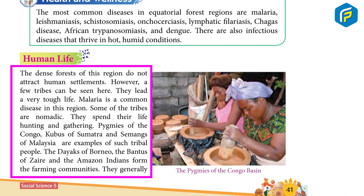The dense forests of the region do not attract human settlements. However, a few tribes can be seen here. They lead a very tough life. Malaria is a common disease in this region. Some of the tribes are nomadic — they spend their life hunting and gathering. Pygmies of the Congo, Kubis of Sumatra, and Simangs of Malaysia are examples of such tribal people. The Dayaks of Borneo, the Bantus of Zaire, and the Amazon Indians form the farming community.